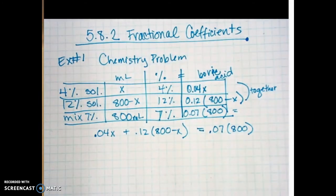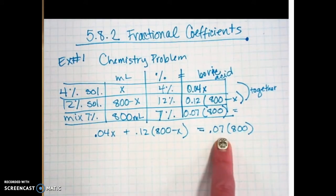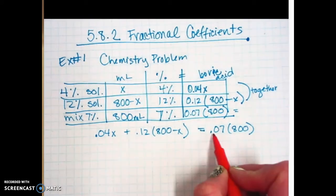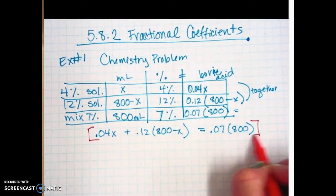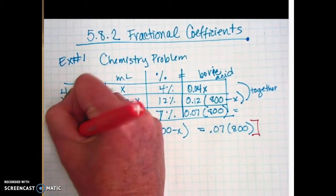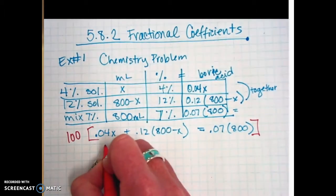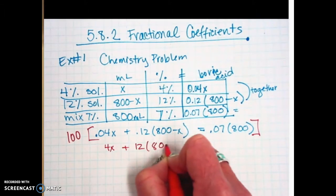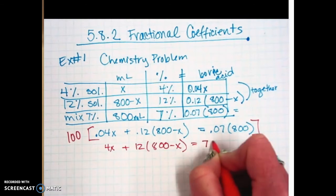Once you've got the equation set up, see if you can simplify it a little bit. You've got a decimal here, a decimal here, and a decimal here. What could I multiply all three of those terms by to get rid of decimal? A hundred, right? Because if you move it twice, that would get rid of the decimal. So I'm going to multiply everything by 100, which gives me 4x plus 12 times 800 minus x equal to 7 times 800.